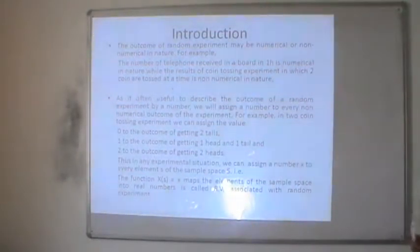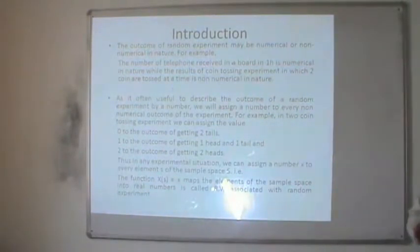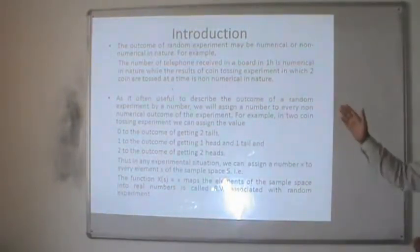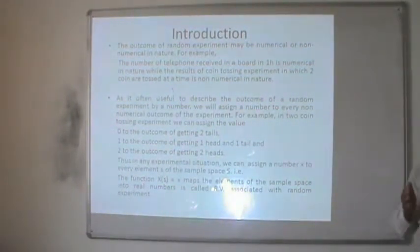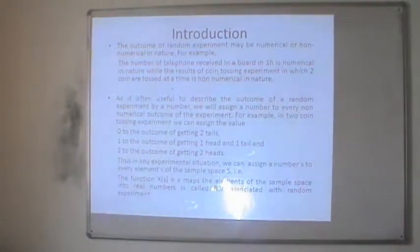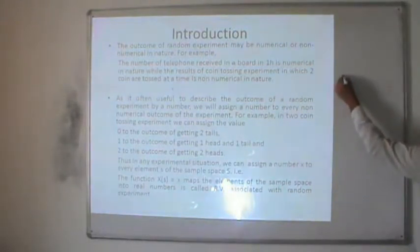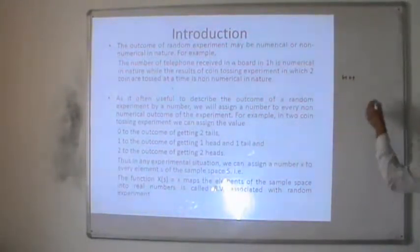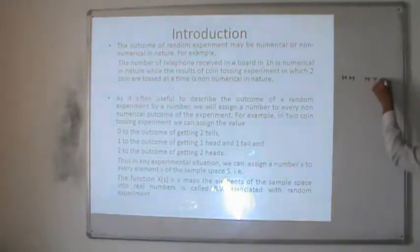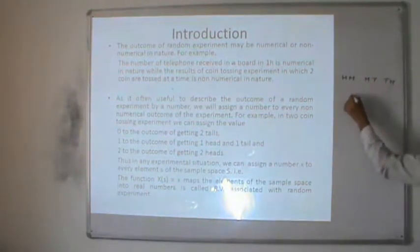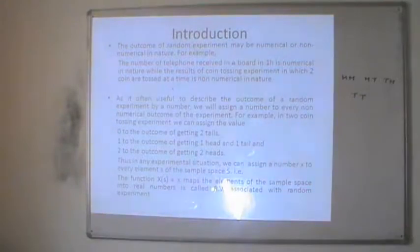For example, the number of telephone calls received at a switchboard in one hour is numerical in nature, while the result of a coin tossing experiment in which two coins are tossed at a time is non-numerical in nature. Because if we toss two coins, our outcome is either head-head, head-tail, tail-head, or tail-tail, which is non-numerical in nature.